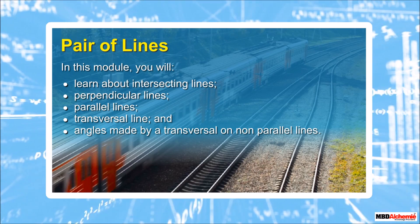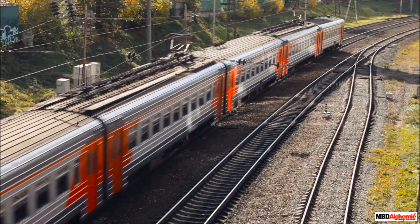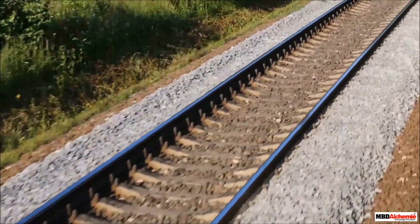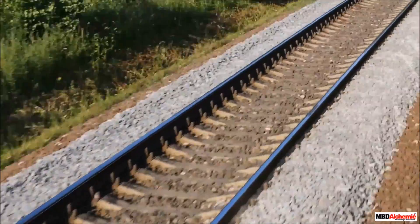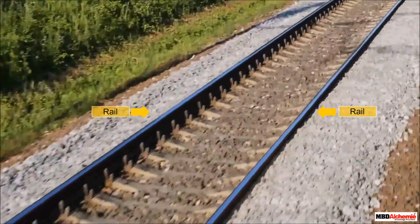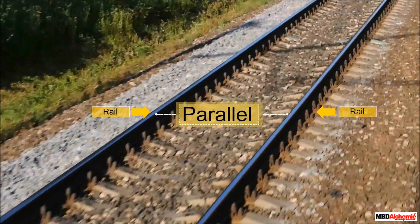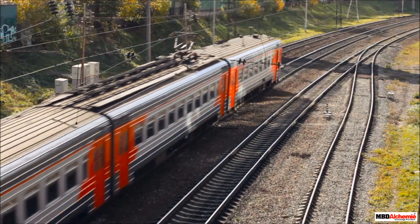Have you ever seen railway tracks? These rails are placed opposite to each other. If you keep moving ahead on the same track, the rails do not meet anywhere. As these rails do not meet anywhere on the track, it shows that the rails are parallel to each other.